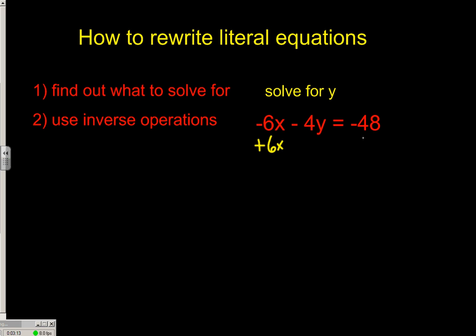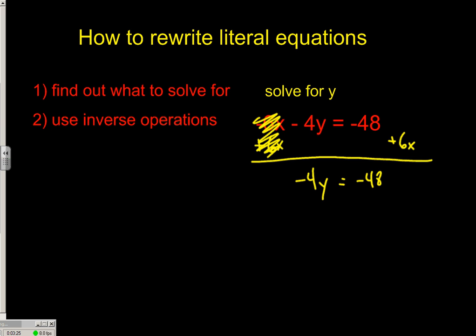Let's get the x away from the y since we're solving for it. Pull down our negative 4y, pull down negative 48, pull down positive 6x. Now we're just left with having to divide by negative 4. So technically we can just have this all divided by negative 4 on the right side. What you're looking for is a situation where you go: negative 48 divided by negative 4 is positive 12.